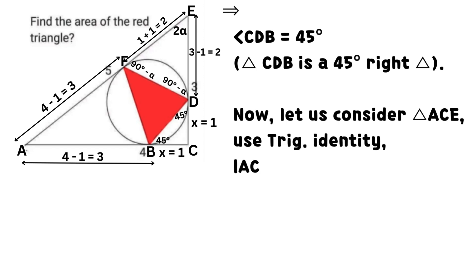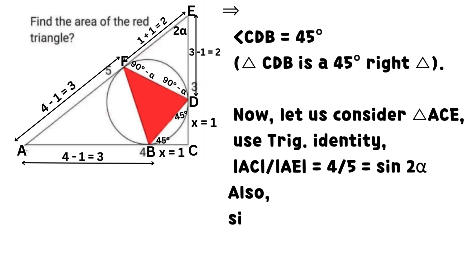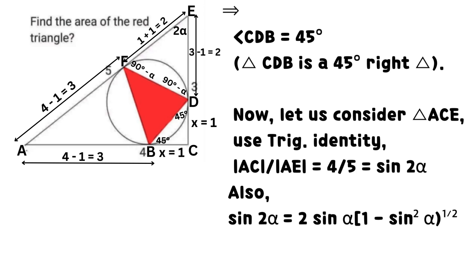Triangle CDB is a 45-degree right triangle. Now let us consider triangle ACE. Using the trigonometric identity, AC divided by AE equals 4 divided by 5, which equals sine 2 times alpha.